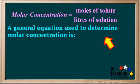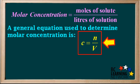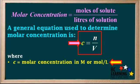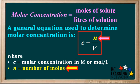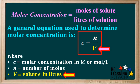A general equation used to determine molar concentration is C equals n over V, where C is the molar concentration in molarity or moles per liter, n is the number of moles, and V is the volume in liters. If the volume of a given solution is expressed in units other than liters, it needs to be converted to liters to use in this equation.